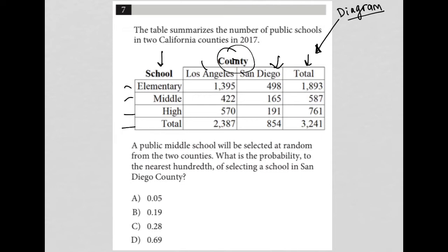The table summarizes the number of public schools in two California counties in 2017, which I already understood by looking at the table. It goes on to say a public middle school will be selected at random from the two counties. What is the probability, to the nearest hundredth, of selecting a school in San Diego County? Any time I see the word probability on this test, I am thinking fraction. The numerator of that fraction is what I want.